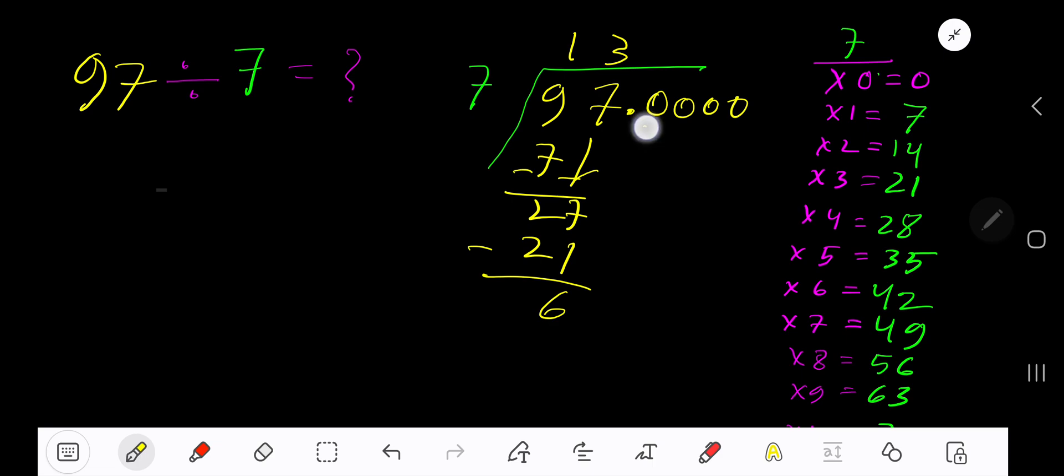Bring down the first zero. Before the zero there is a decimal. The decimal must come to the quotient directly. 7 goes into 60 how many times? 9 times would be 63, which is greater, so 8 times.